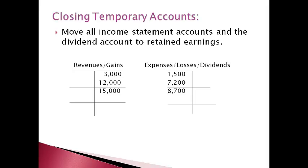Closing entries move the balances for income statement accounts to retained earnings so they can start over at the beginning of the next period. All revenue accounts have a credit balance. To get the balance to zero, an entry for the amount of the balance must be made on the debit side. All expense accounts and losses and dividends have a debit balance. An entry for the amount of the balance must be made to the credit side to make the balance equal zero.